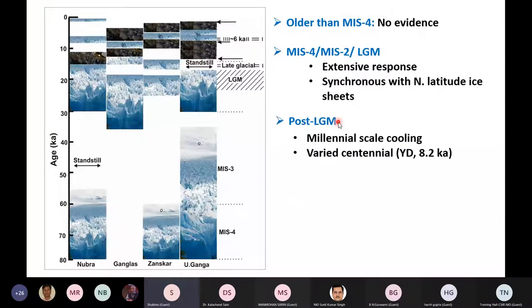For the period younger than 20 kilo years, that is the post-LGM, we found that glaciers respond sensitively to the millennial scale cooling periods like that of the late glacial or mid-Holocene, whereas they do respond to the centennial scale cooling also, but the response is varied.